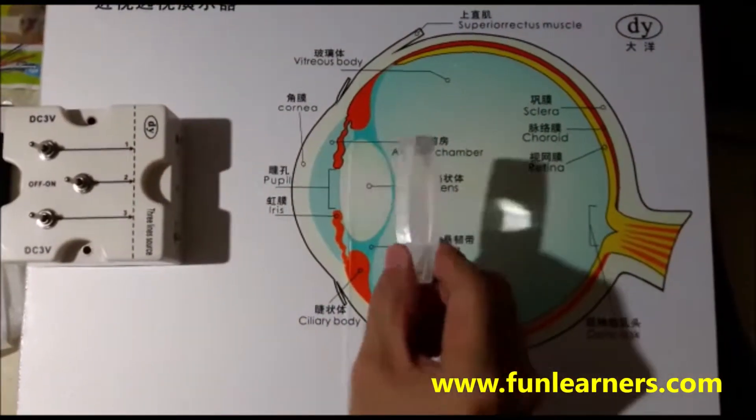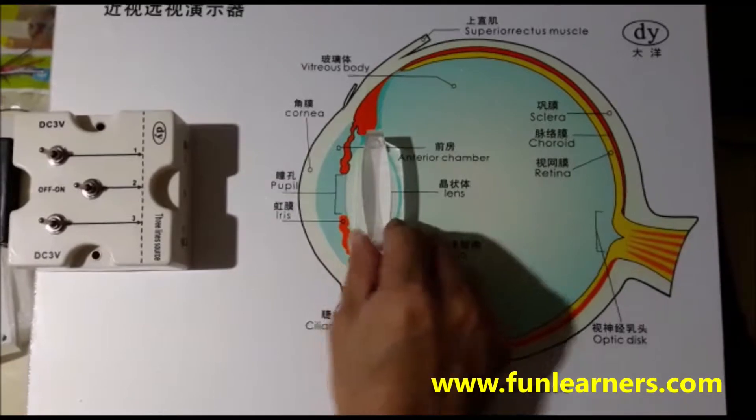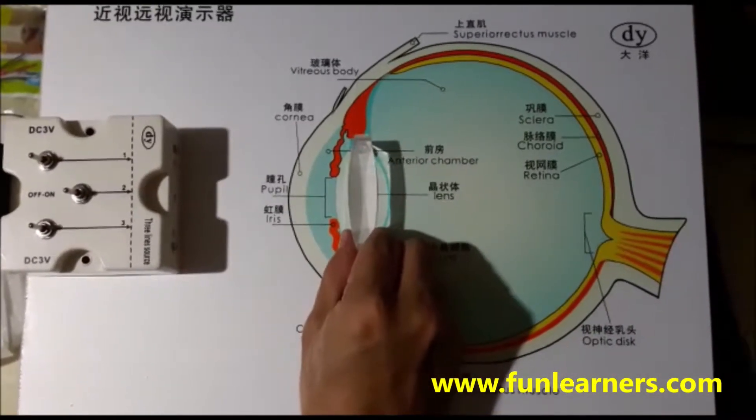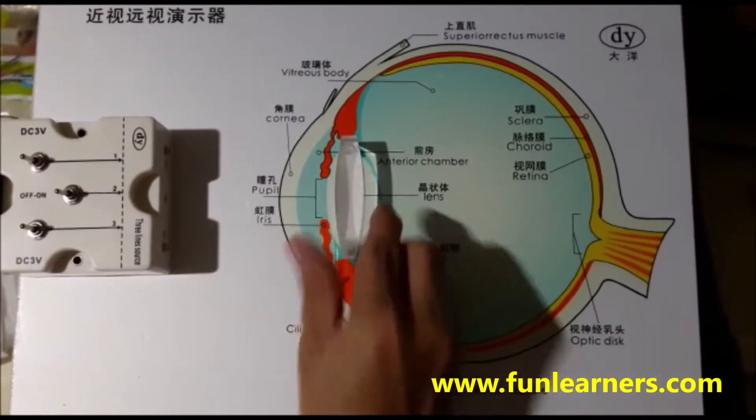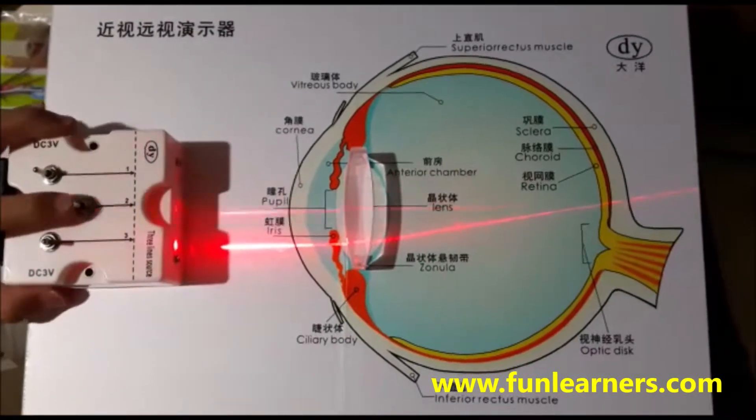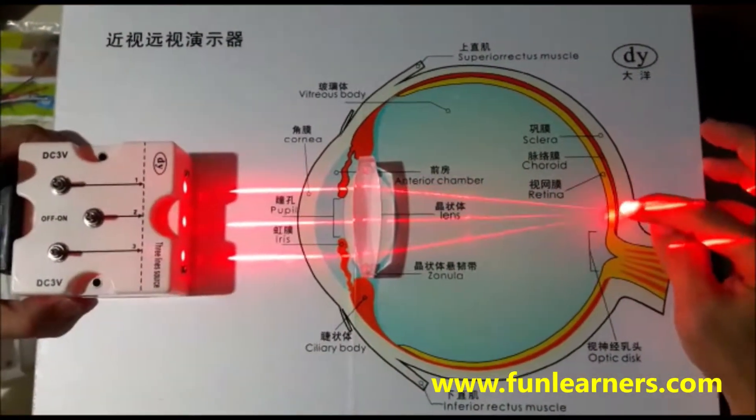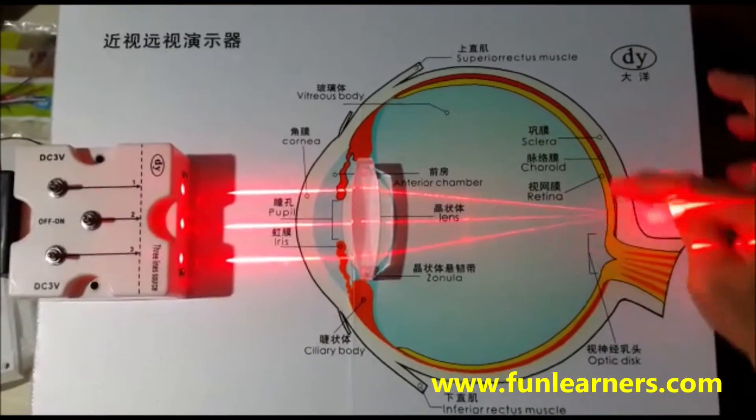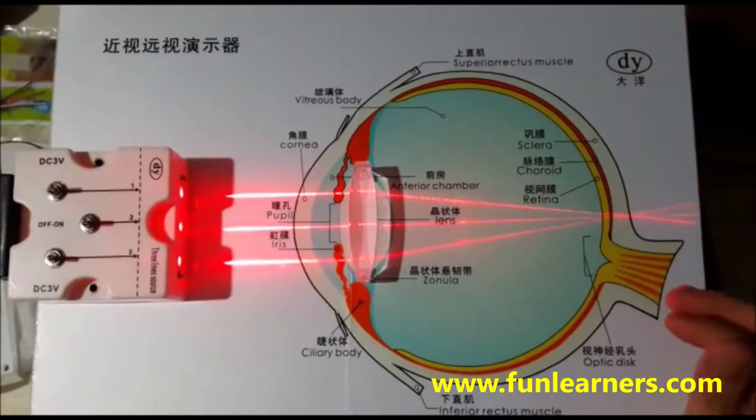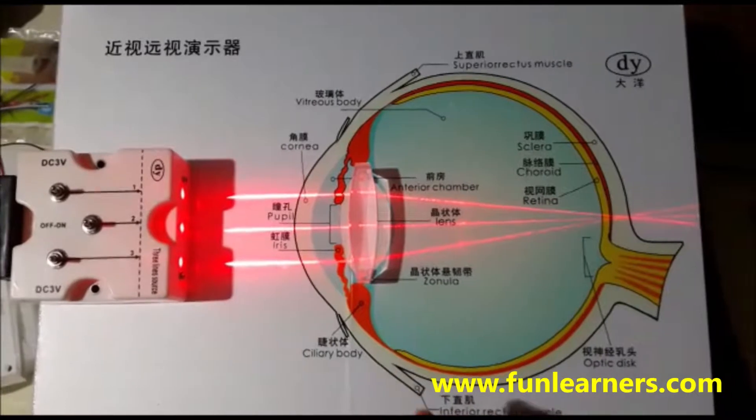Okay, this is the lens in our eyes. This is a very natural, normal lens. When light comes in, the light ray will converge at the retina, so this image is perfectly clear. Now what happens if you have...